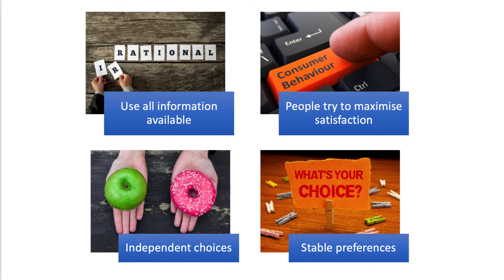Some of the key assumptions behind rational behavior are: first, that agents use all the information available — they gather complete information on all the alternatives and are therefore able to make a fully informed choice. Secondly, we assume that people are trying to be optimal, making choices between products that maximize the total satisfaction they get from allocating their limited budget.